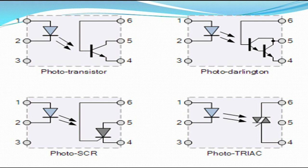The phototransistor and photo Darlington are for DC, being direct current, while the photo SCR and photo TRIAC are for alternating current, being AC.